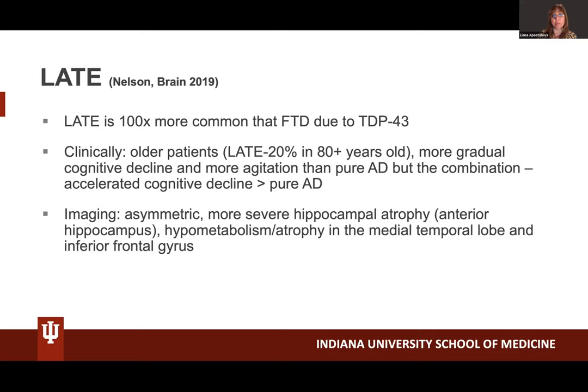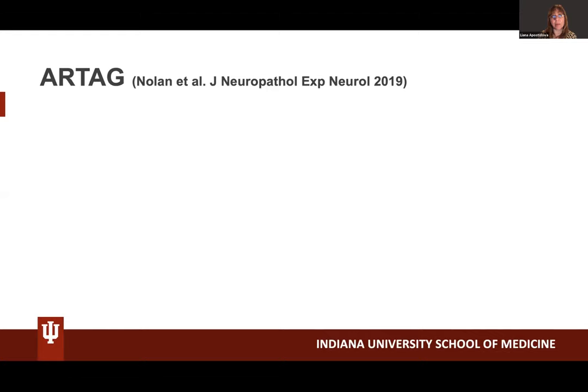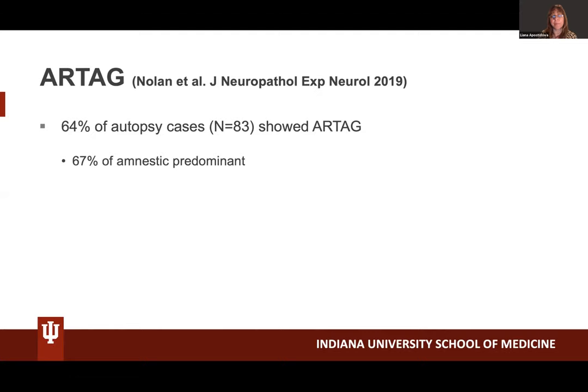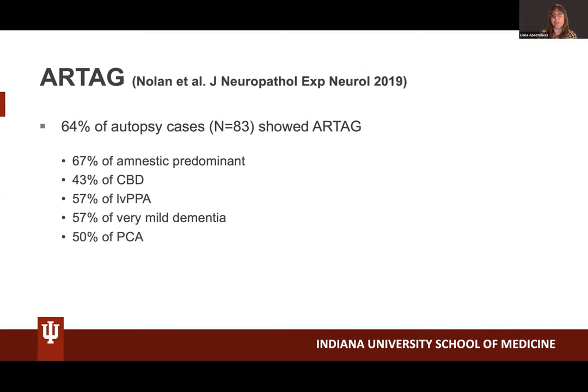How about ARTAG? This is work done by Leah Greenberg's lab. ARTAG is extremely common — 64% of 83 autopsy cases studied showed ARTAG. Among amnestic phenotypes, 67% showed ARTAG. Among corticobasal degeneration, 43% had ARTAG. Logopenics, very mild dementia cases, and PCAs all have 50-plus percent ARTAG. How about cognitively normals? They only had three cases, and all three showed ARTAG.